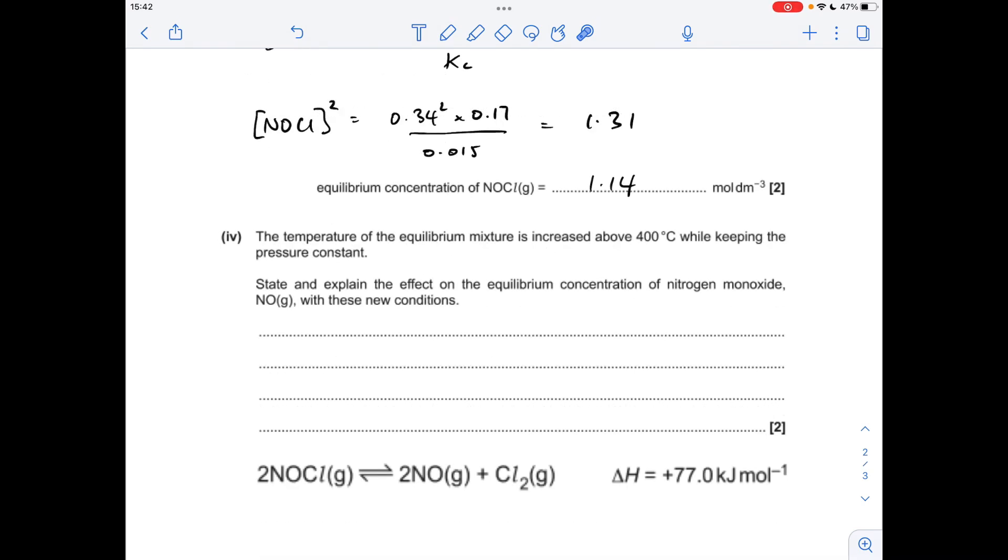And then for the next part, we've got to predict what's going to happen to the equilibrium concentration of nitrogen monoxide if we heat the temperature above 400 degrees C. So I've just copied out the relevant information, the equilibrium and the delta H. So we can see from the positive sign that this forward reaction is endothermic. And we know from Le Chatelier's principle that an increase in temperature favours the endothermic direction. So it's going to make the reaction go forwards even more over to the right. So this NO concentration is going to increase.